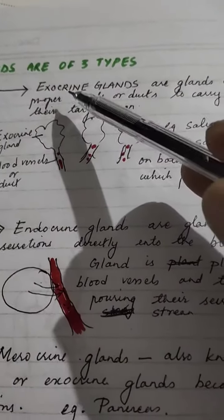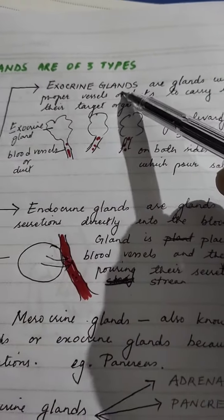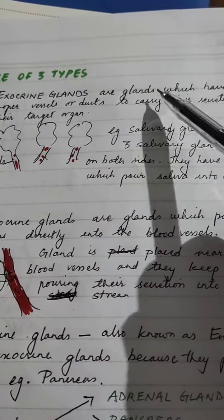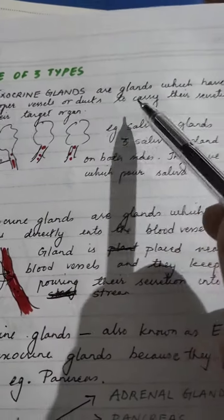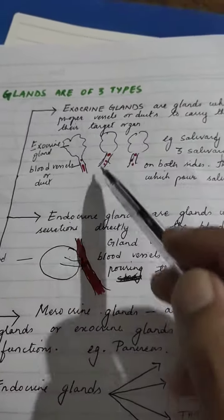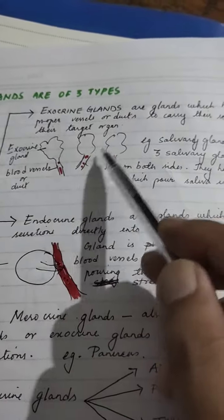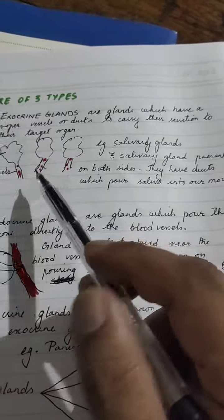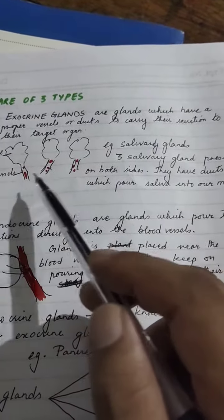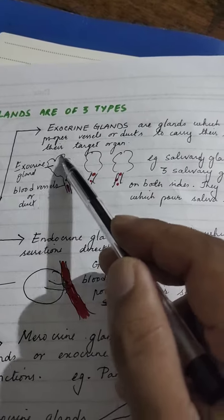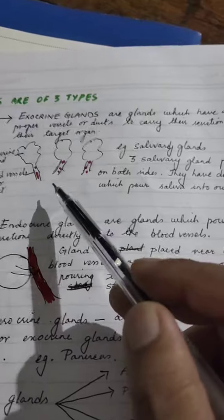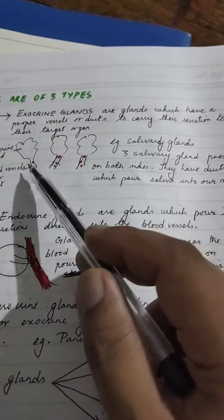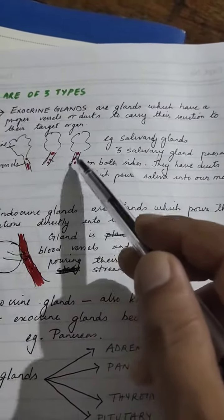Exocrine glands are glands which have proper vessels or ducts to carry their secretion to their target organ. For example, we have three salivary glands present on both sides — this is the exocrine gland. The ducts pour saliva into our mouth.